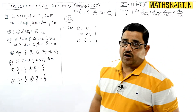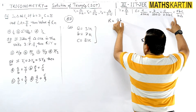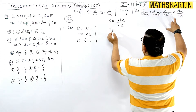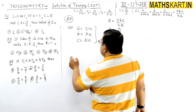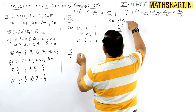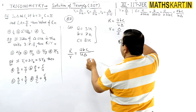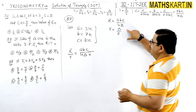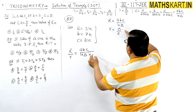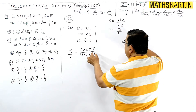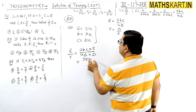Capital R = abc/4Δ से निकालेंगे और small r = Δ/s से। R/r = (abc/4Δ) ÷ (Δ/s) = abc·s / 4Δ². So we write: R/r = (3k × 7k × 8k × s) / (4Δ²), and reciprocate r to multiply.